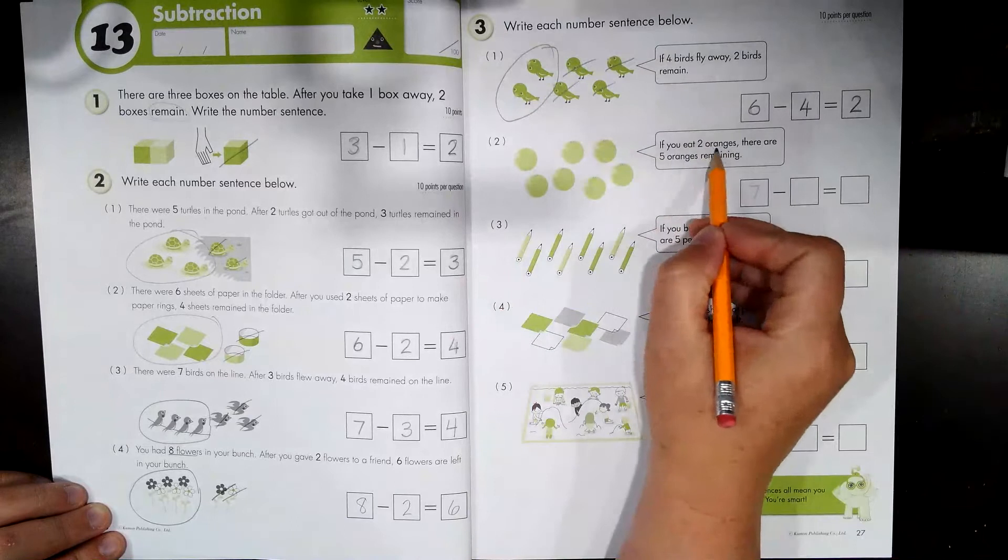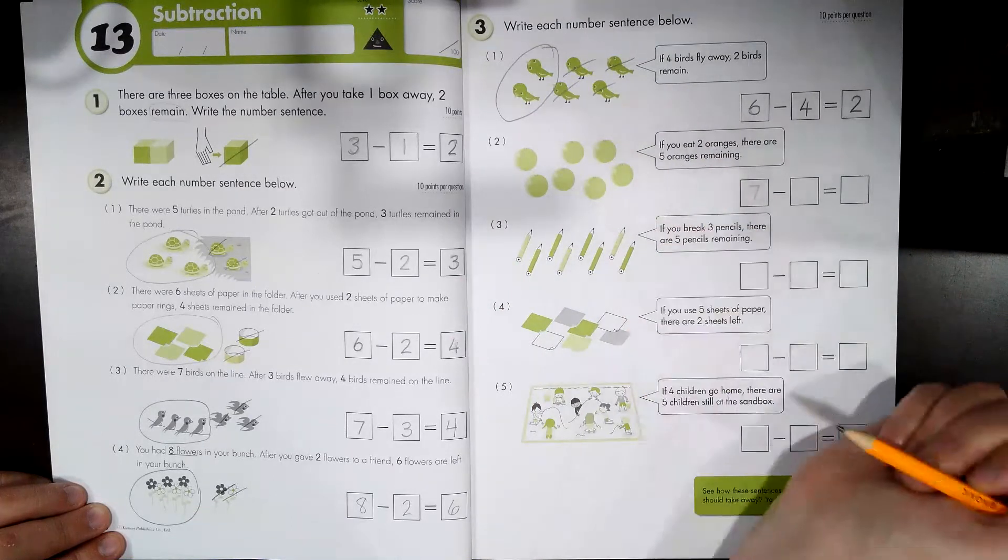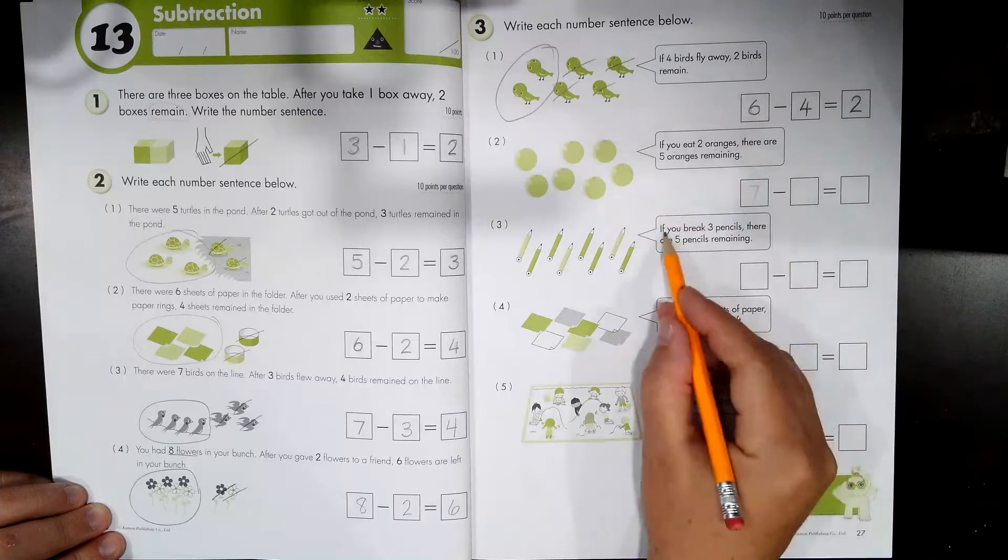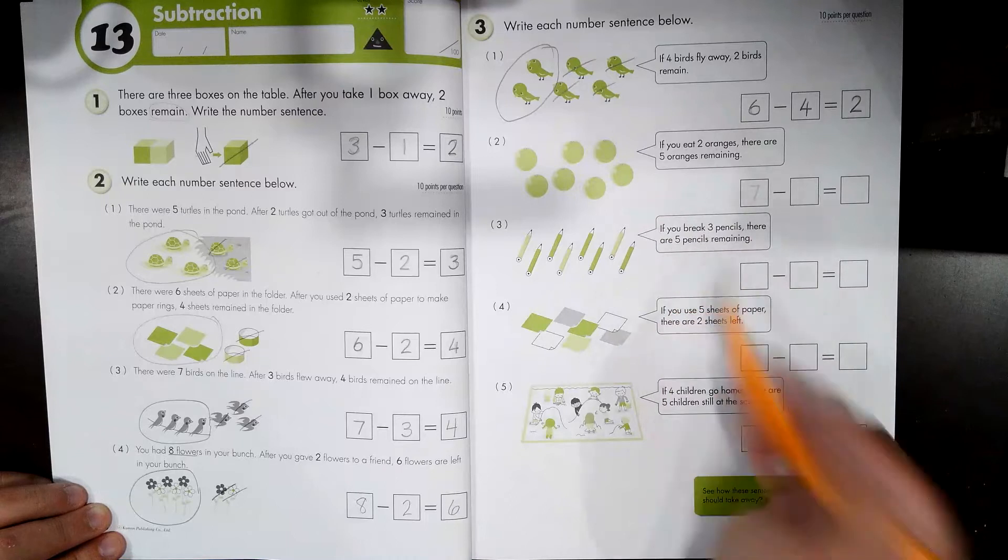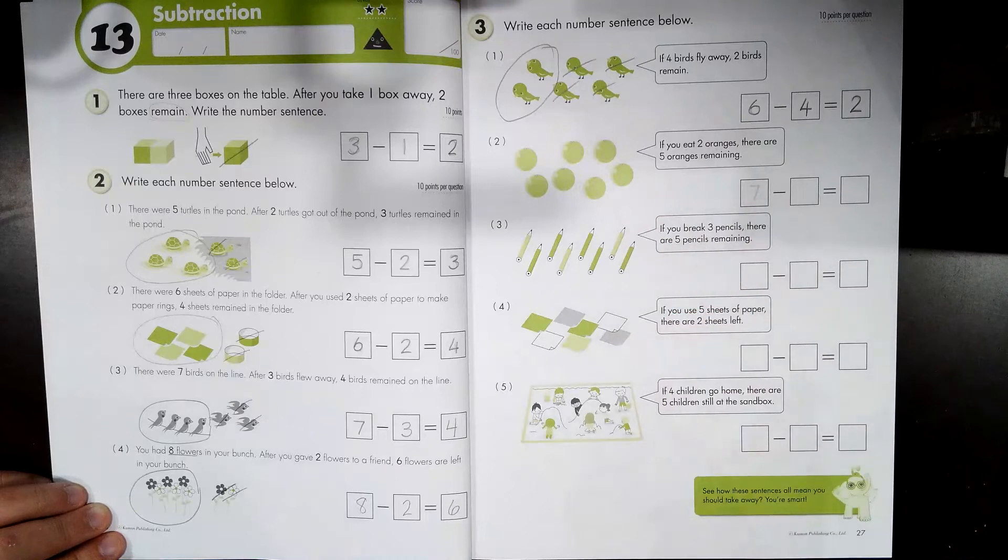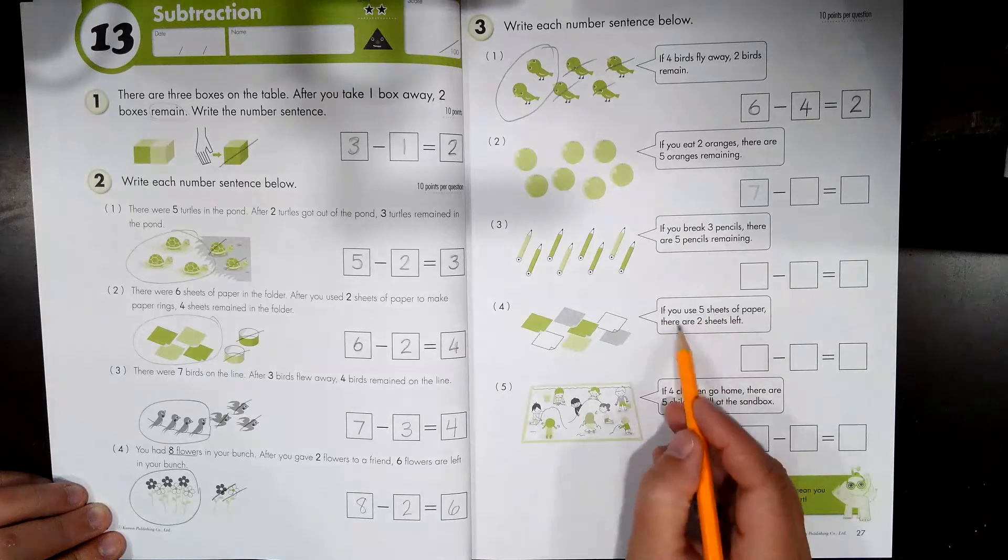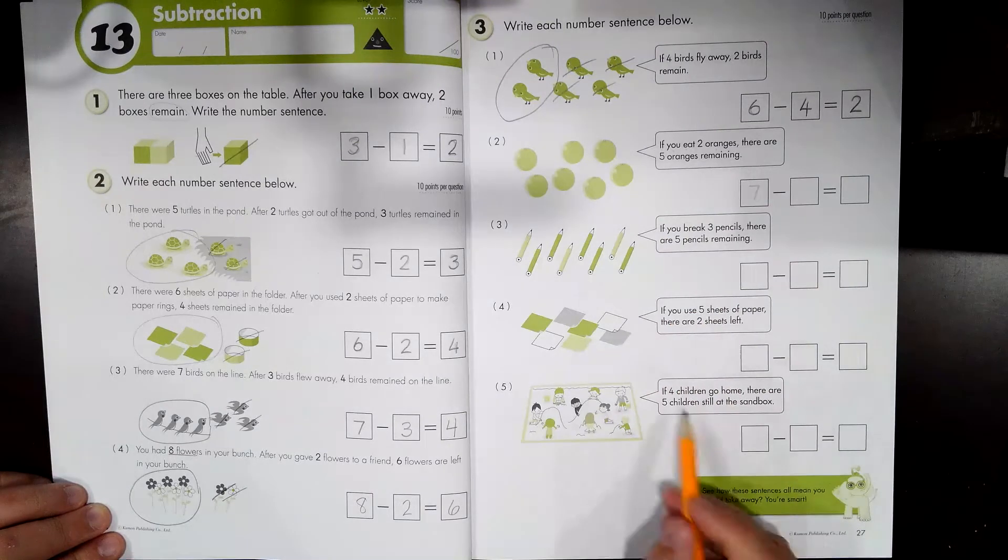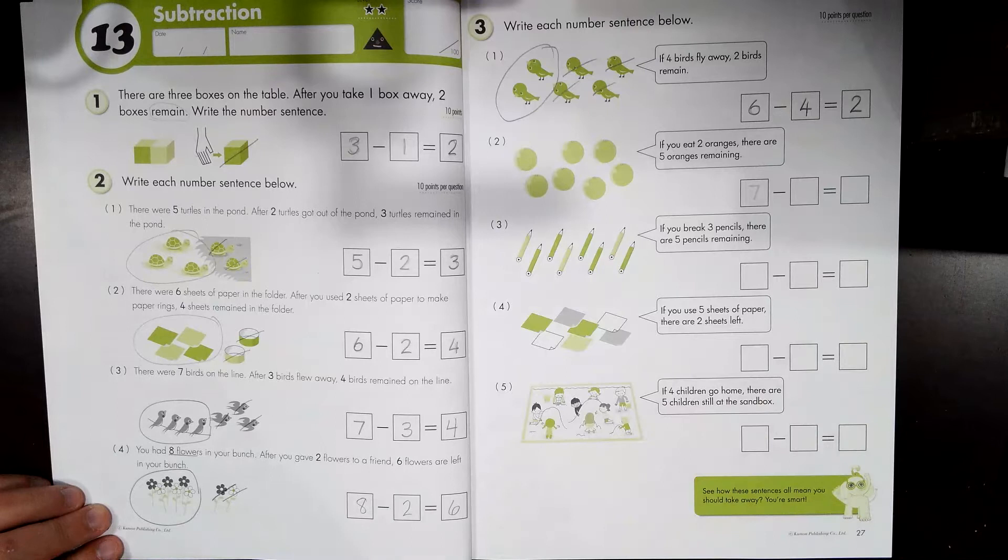If you eat two oranges, there are five oranges remaining. If you break five sheets of paper, there are two sheets left. If four children go home, there are five children still at the sandbox. All right, let's check your work.